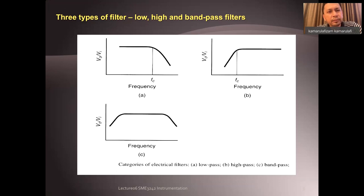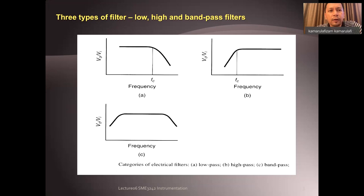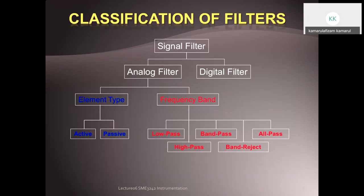The last type is the band pass filter. Here you put a lower limit and upper limit — anything within this range will pass through and anything outside will be blocked. For the band pass filter graph C, you have two cutoff frequencies: the frequency cutoff lower, FCL, and the frequency cutoff upper, FCH, located at both corners of the graph.